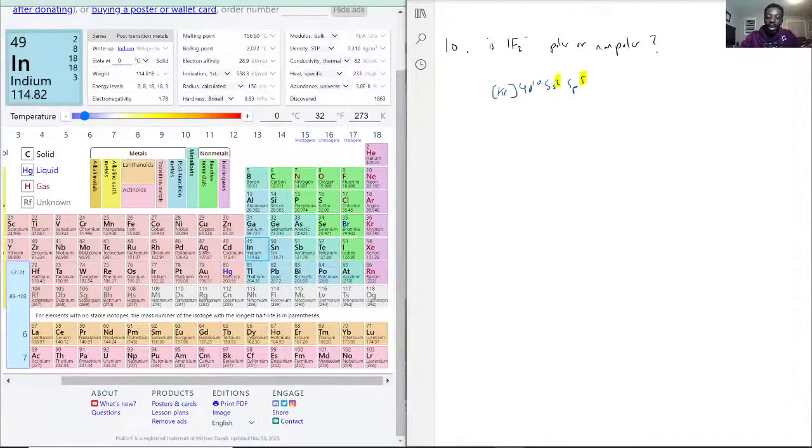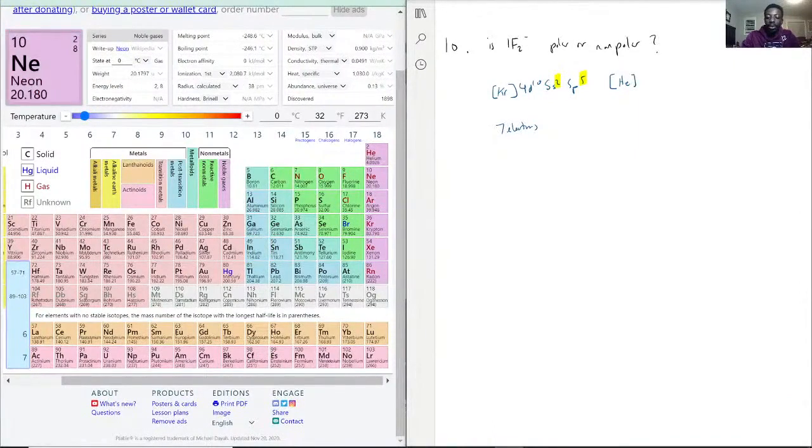Now fluorine starts out at helium because that's the most recent one, well the one right before it, and then we have 2s2 2p5 as well.